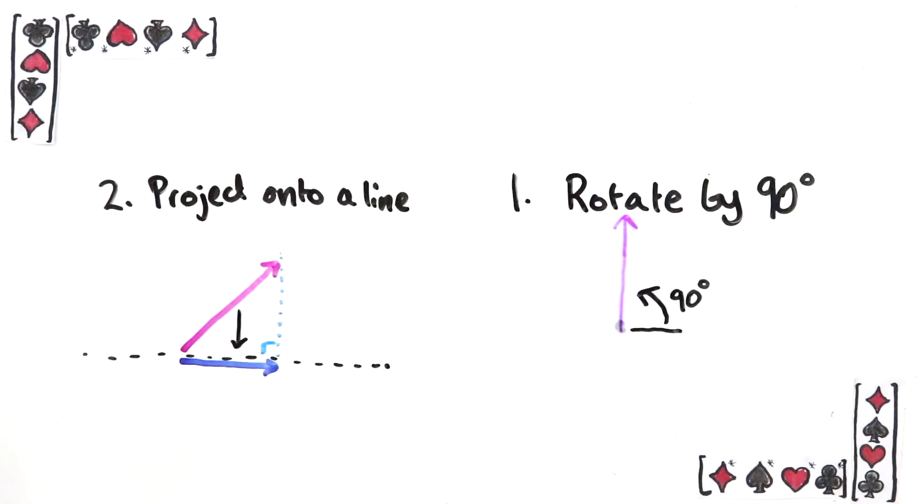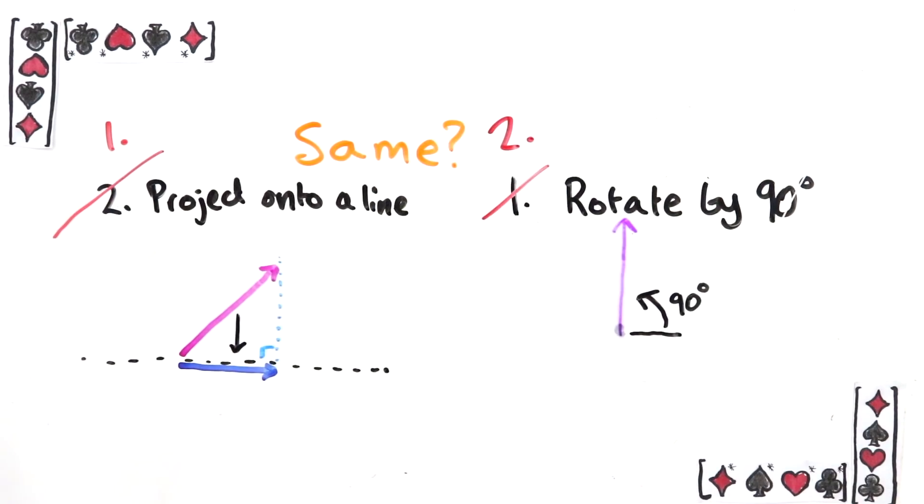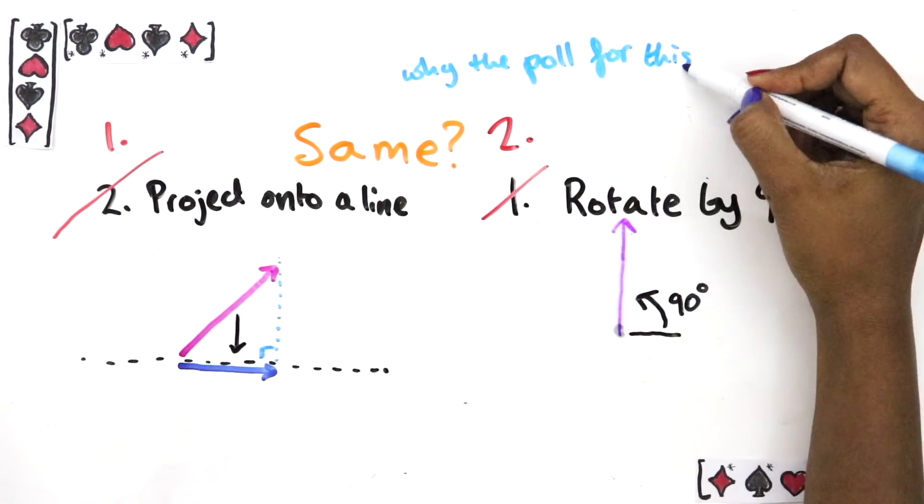Is it the same thing to do the projection first and then the rotation? I can tell you it's not, but I want you to pause the video now and think of a vector that would come out different if you do the projection first or if you do it second. If you can think of one, say so in the poll here.